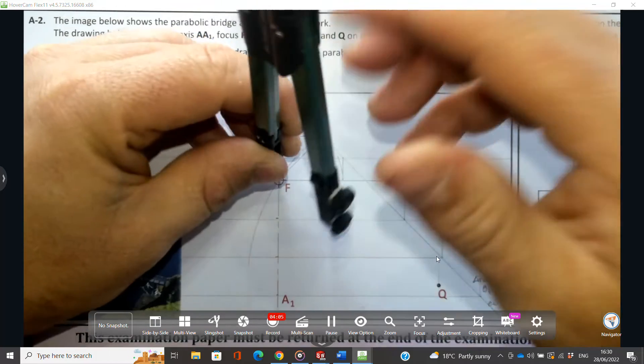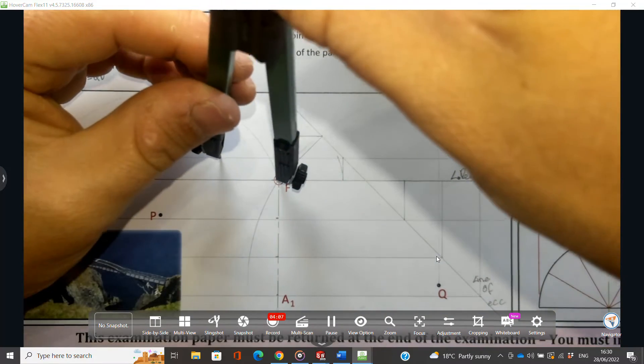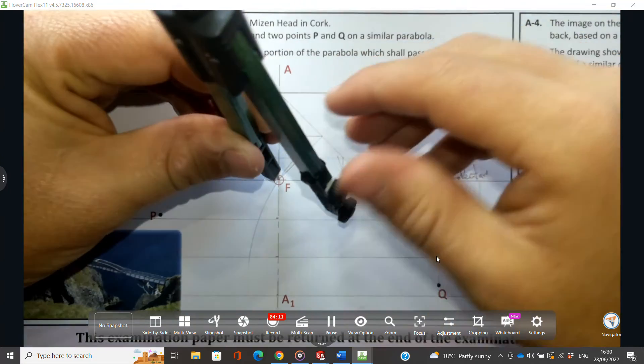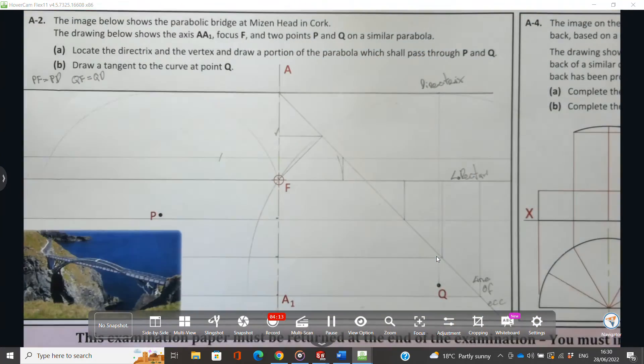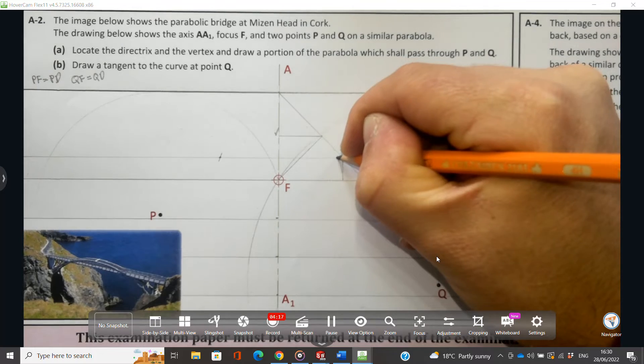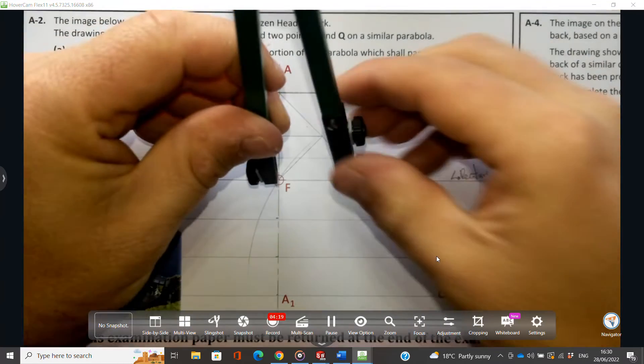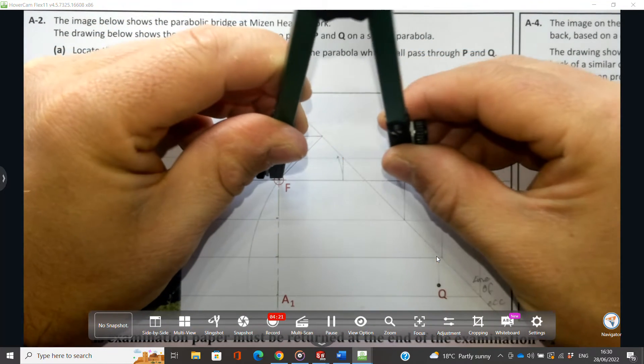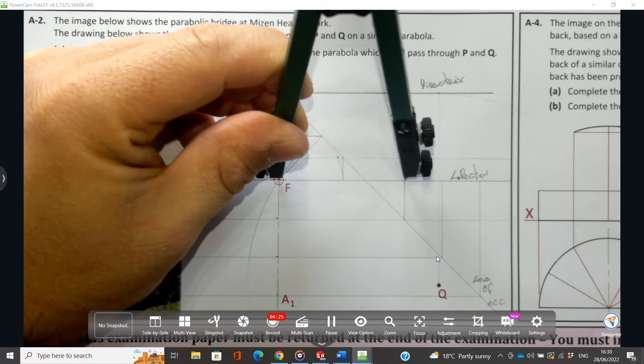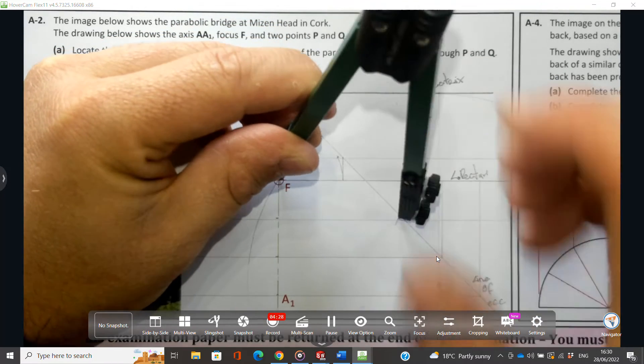And I'm going to swing these points on the latus rectum back onto the lines parallel to the directrix they came from. So I have two points here. Next one I'm going to bring to F, now I'm going to swing this back to here.